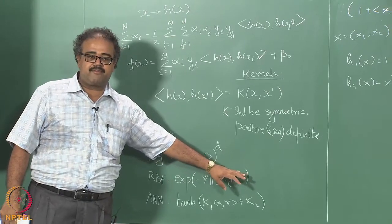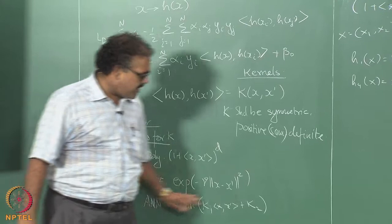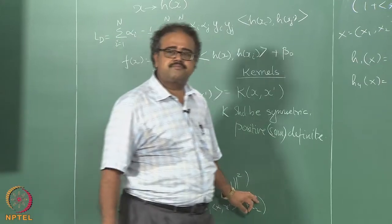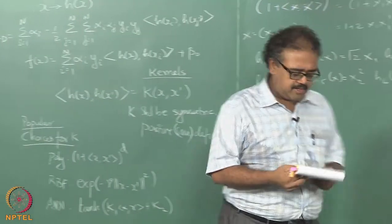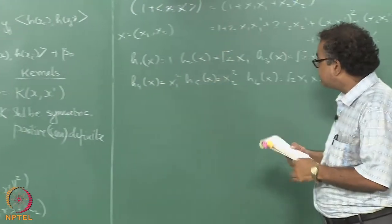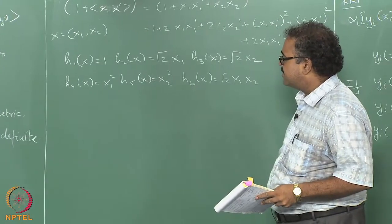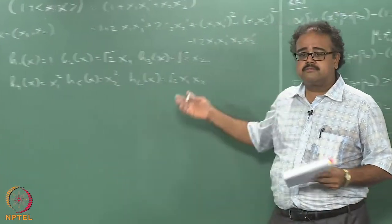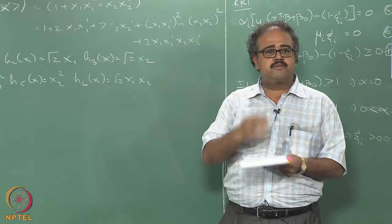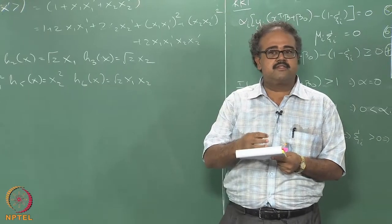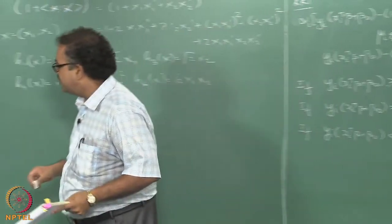That is why the RBF kernels are considered pretty powerful — they work on a variety of data — but they are not all-powerful, so you have to be careful. That is all there is to support vector machines.